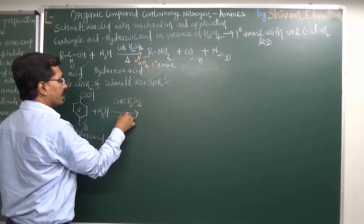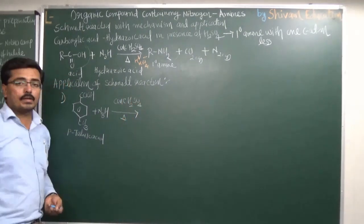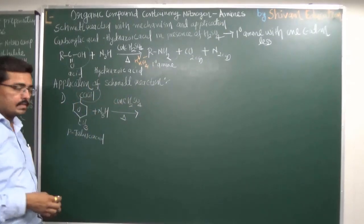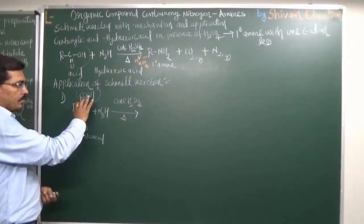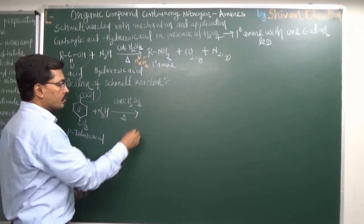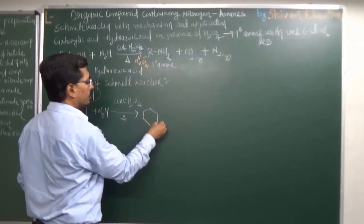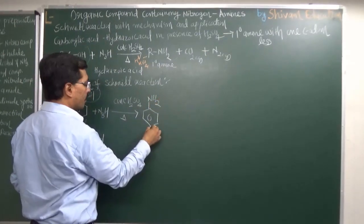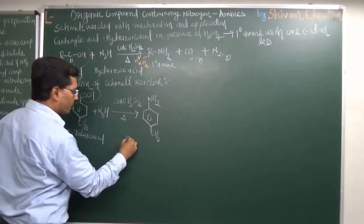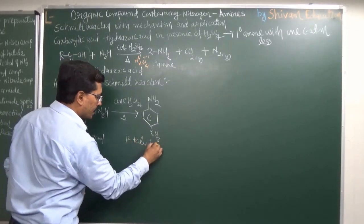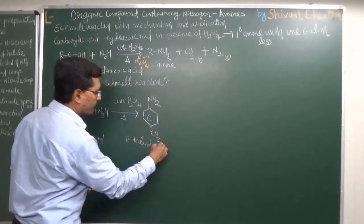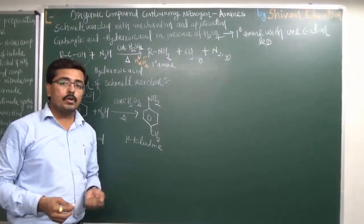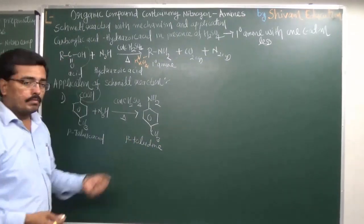Paratoluic acid is allowed to react with hydrazoic acid in the presence of concentrated sulfuric acid. By the mechanism, the -COOH group converts into an -NH₂ group. The product obtained is known as paratoluidine.